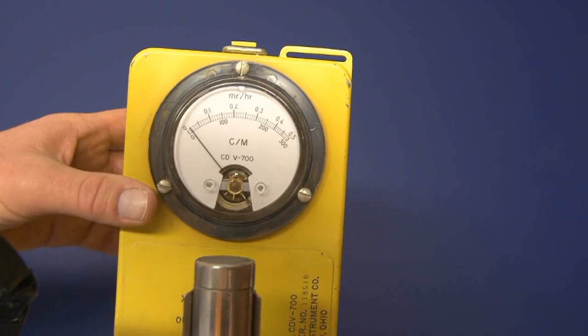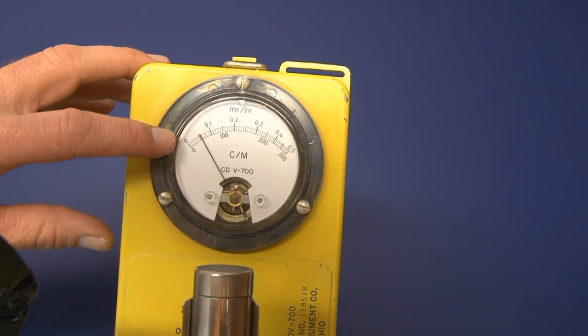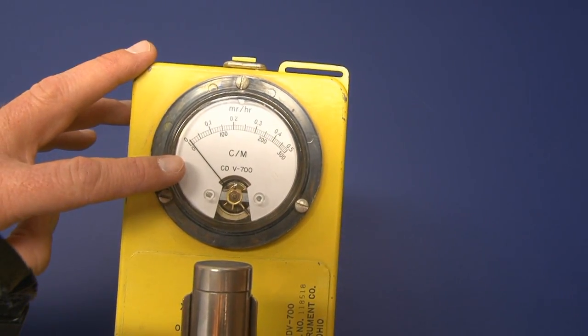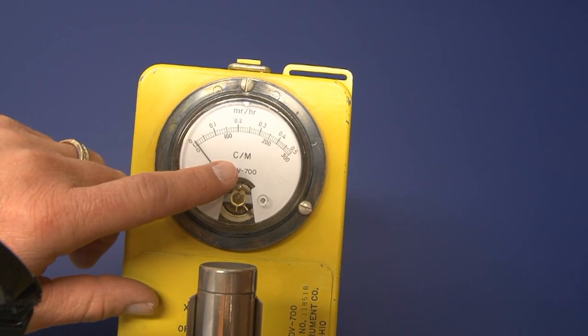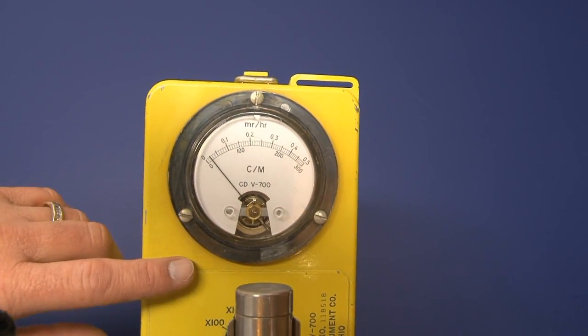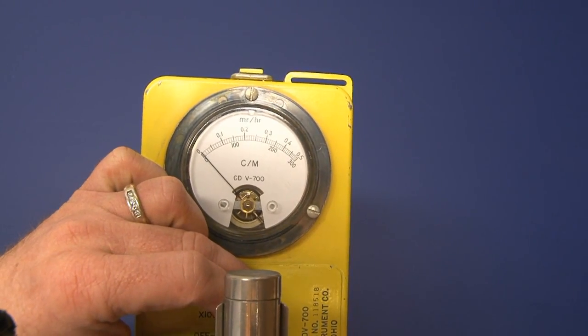How that works is, on the times 1 scale, it gives you an overall operating range of zero to 0.5 MR per hour, or from 0 to 300 counts per minute, depending on what it is you're surveying for, or how you've got your rotating rotary shield in either the open or the closed position.